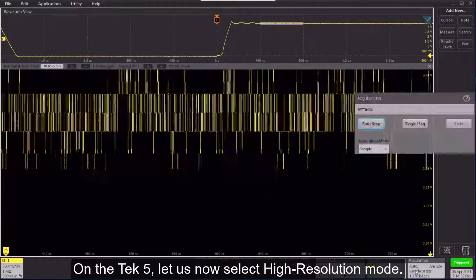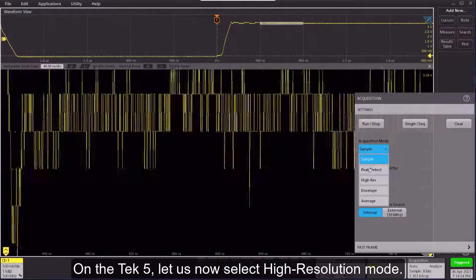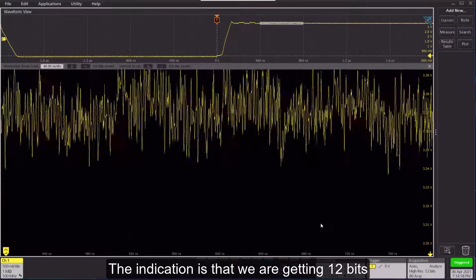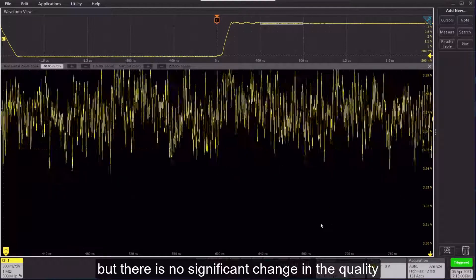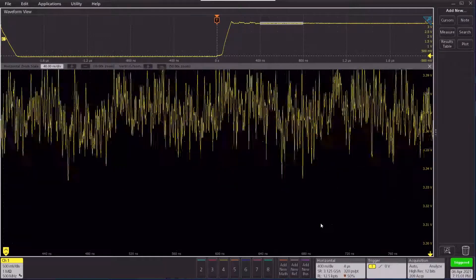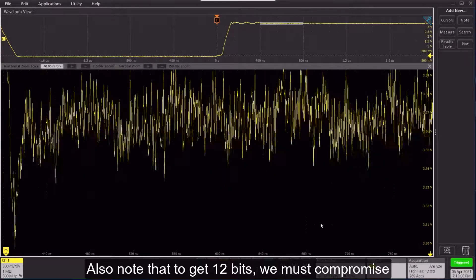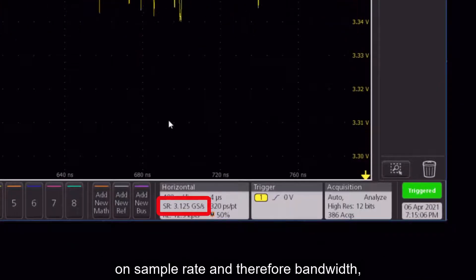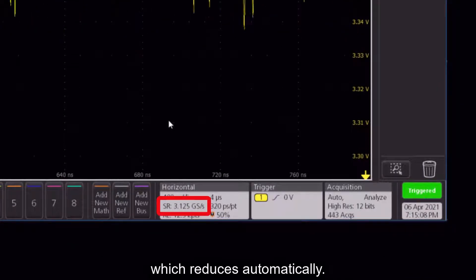On the Tekt5, let us now select high resolution mode. The indication is that we are getting 12 bits, but there is no significant change in the quality of the signal on screen. Also note that to get 12 bits, we must compromise on sample rate and therefore bandwidth which reduces automatically.